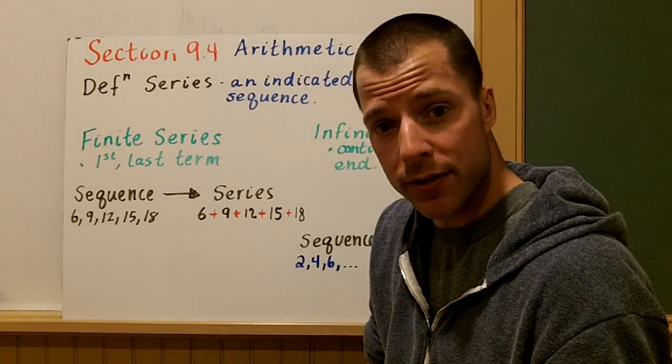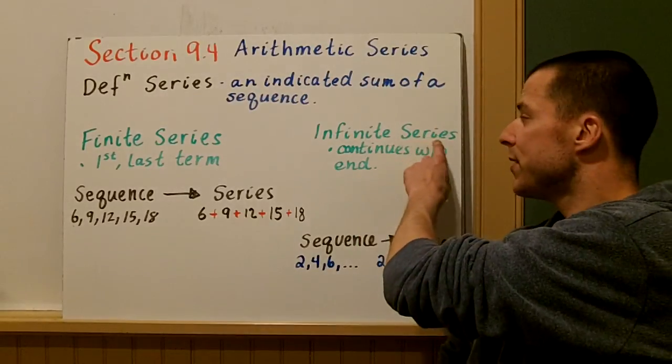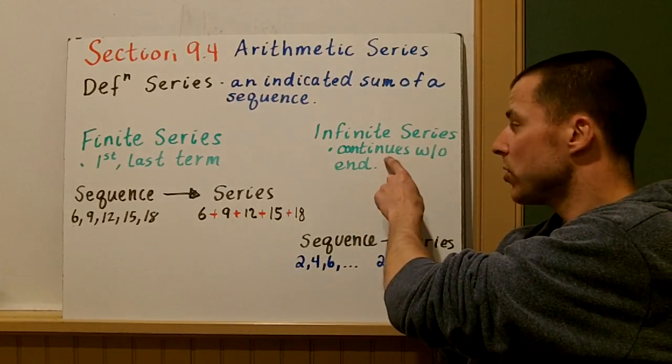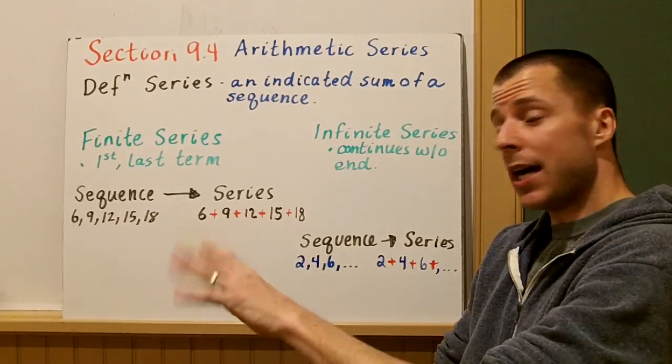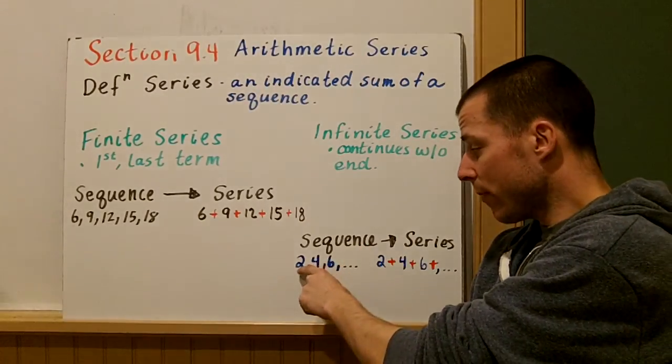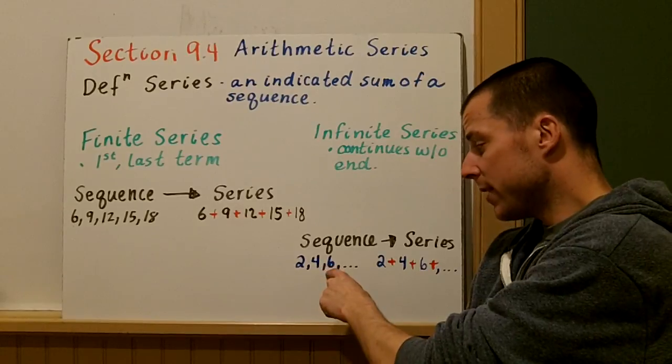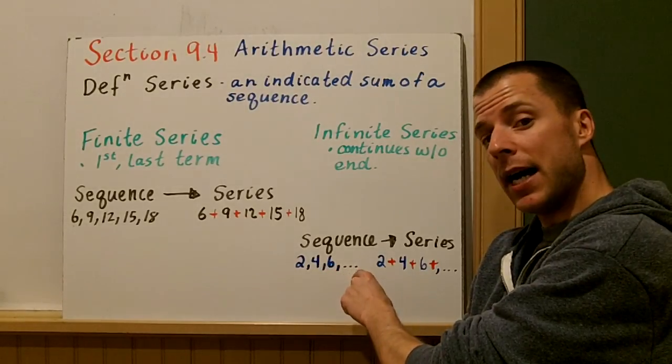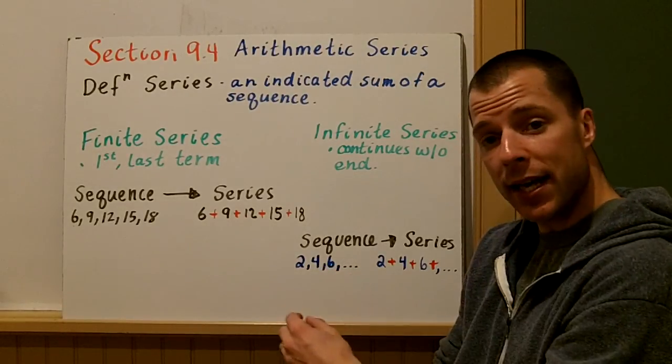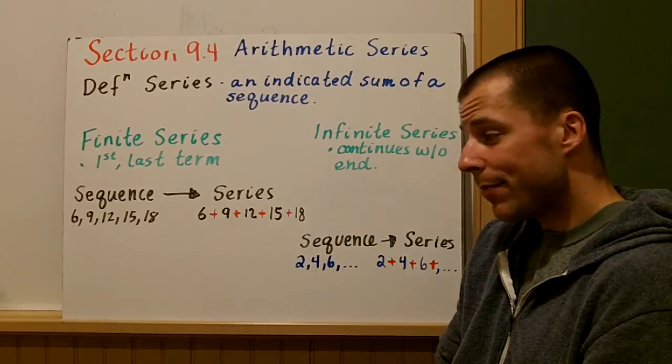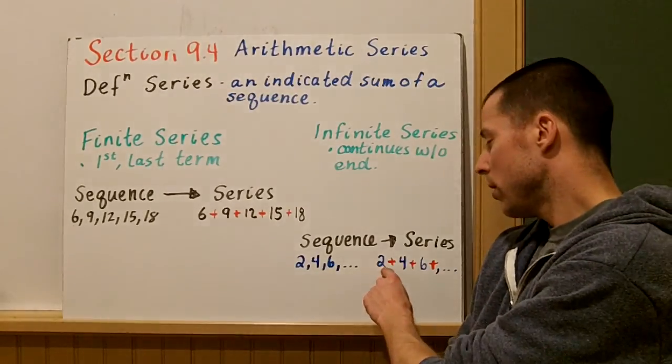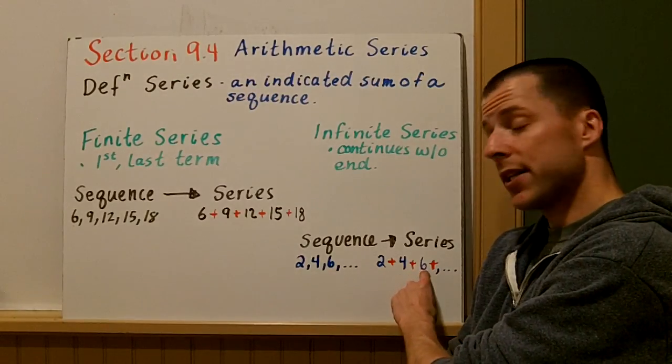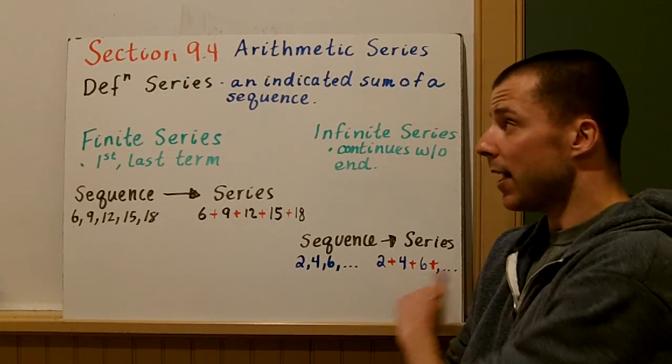So what does an infinite series mean? Well, an infinite series continues without end and doesn't stop. Recall that a sequence like 2, 4, 6, comma, dot, dot, dot—that comma, dot, dot, dot just says that pattern continues forever. So the series would be 2 plus 4 plus 6 plus comma, dot, dot, dot.